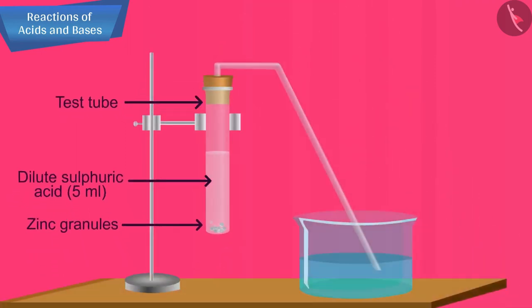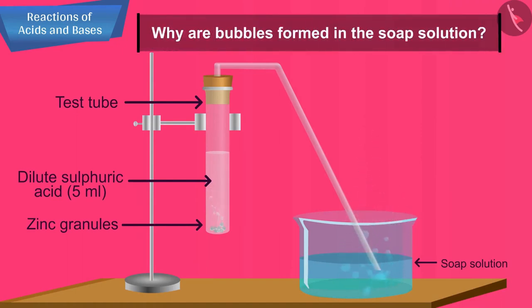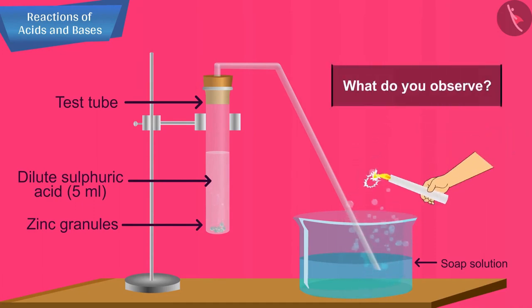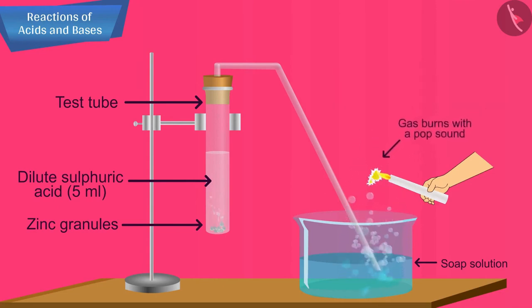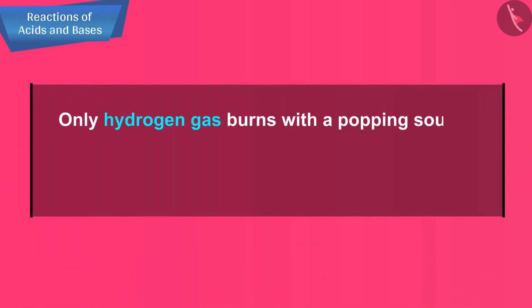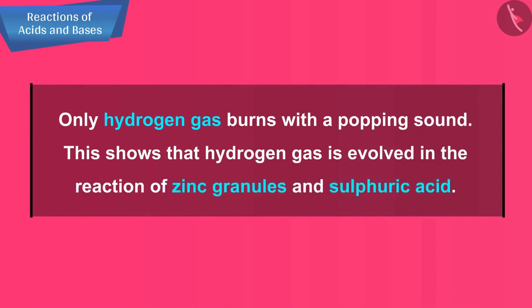Pass the gas being evolved through soap solution taken in a trough by means of a glass tube. Take a burning candle near a gas-filled bubble. The gas present in the soap bubble burns with a pop sound, making a little explosion. Only hydrogen gas burns with a popping sound. This shows that hydrogen gas is evolved in the reaction of zinc granules and sulphuric acid.